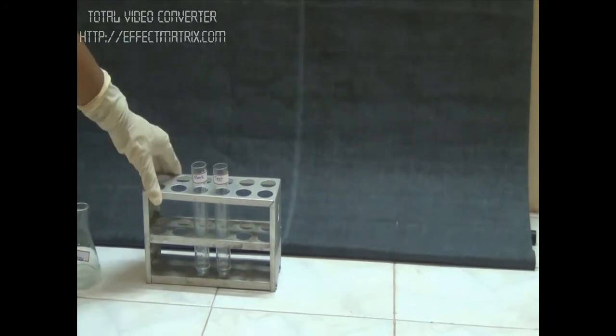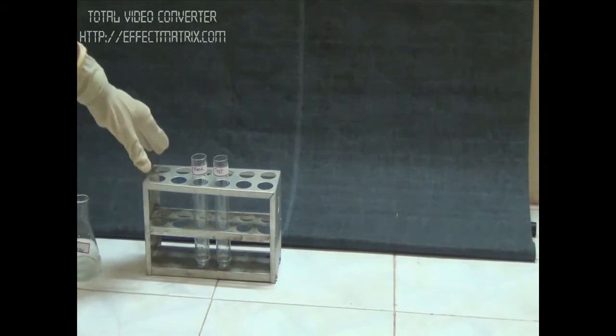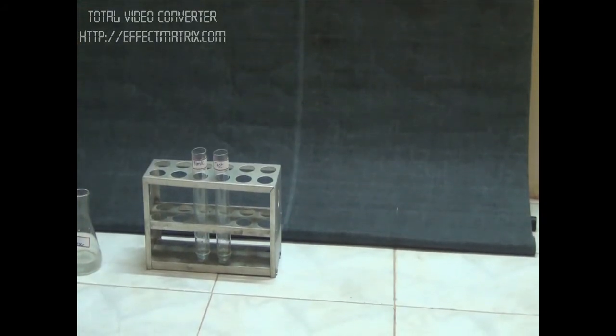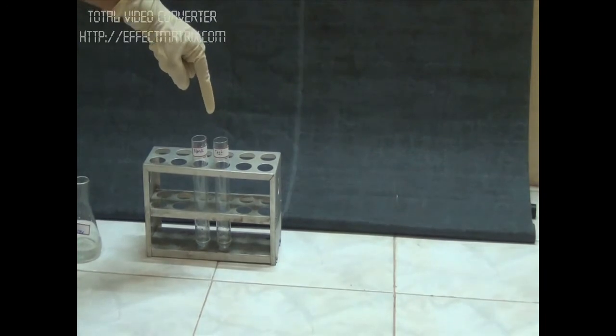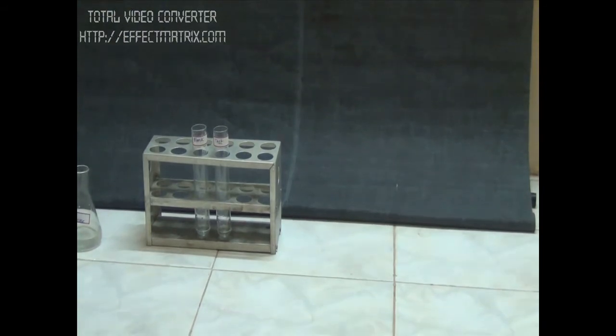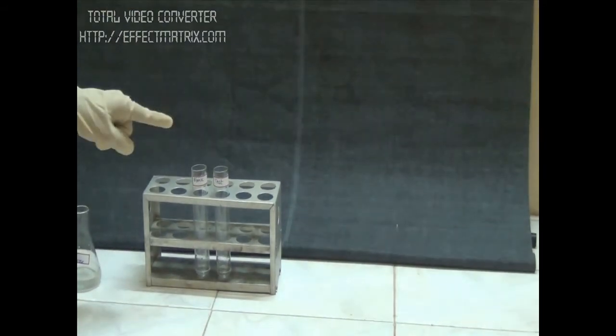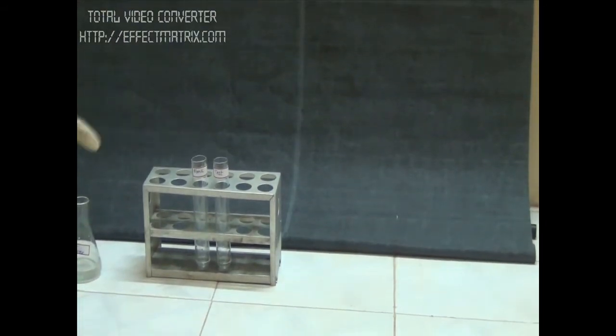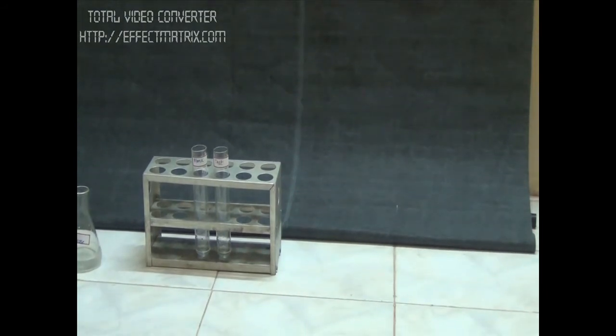When the tubes are incubated for 15 minutes at 55 degrees, the test tube will have fructose and glucose as the enzyme does its work. The blank tube, without enzyme added, will have unchanged sucrose.